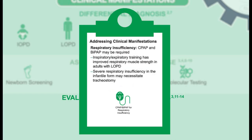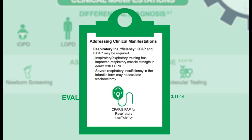Because of respiratory insufficiency, CPAP and BiPAP may be required, and respiratory and expiratory training has been shown in a limited number of patients to improve respiratory muscle strength in adults with late-onset Pompe disease. In extreme cases, particularly in the infantile form, severe respiratory insufficiency could require tracheostomy and ventilation.